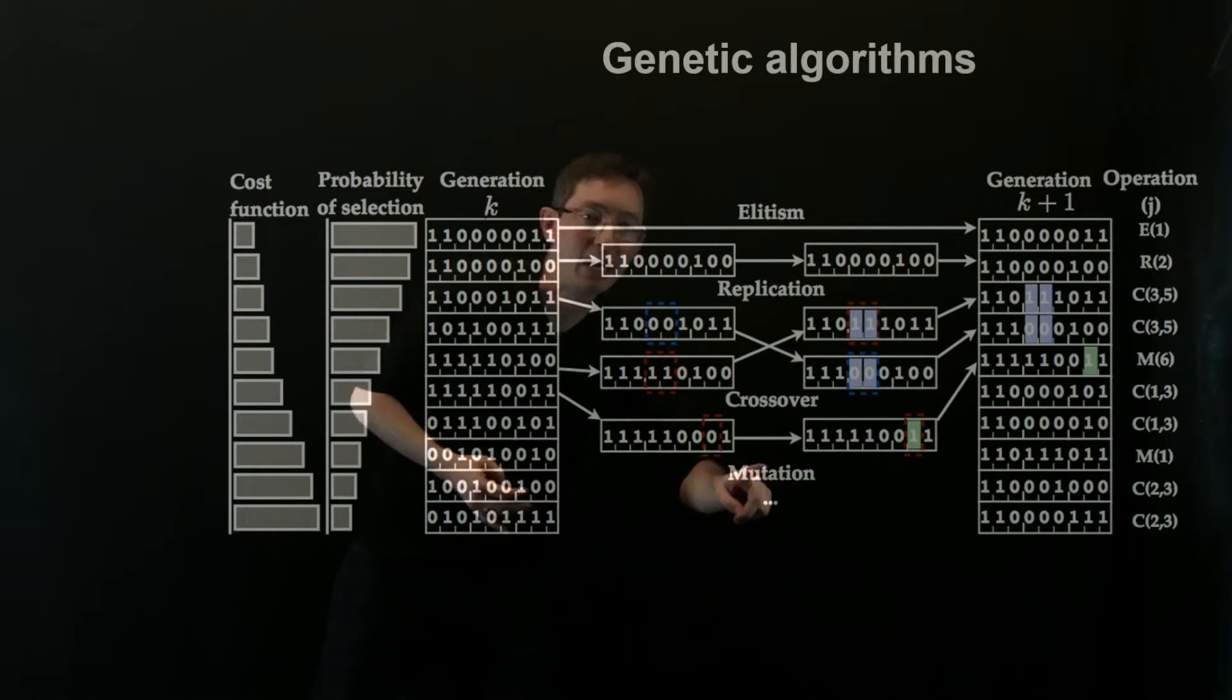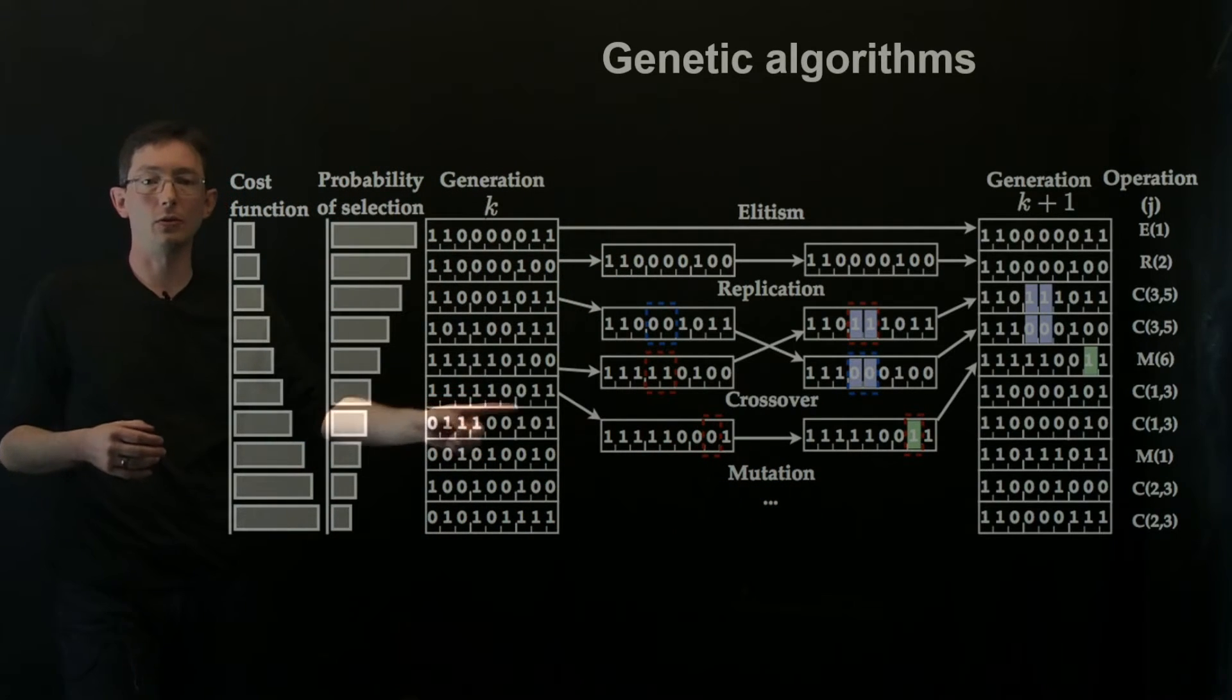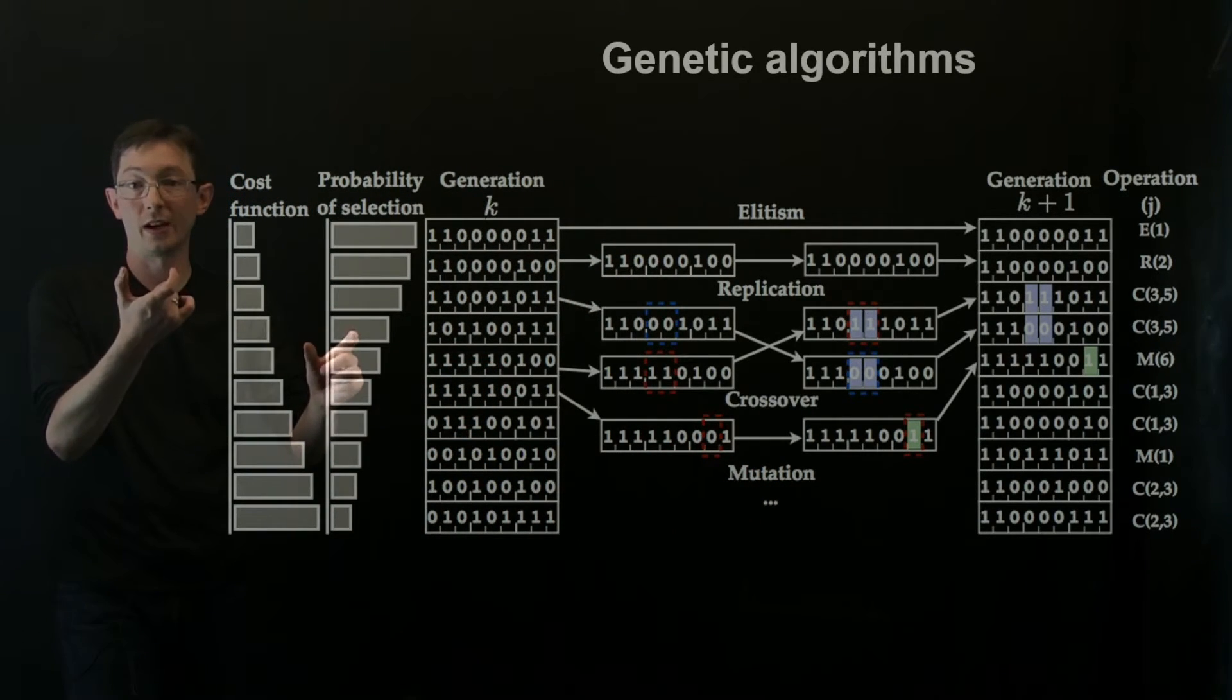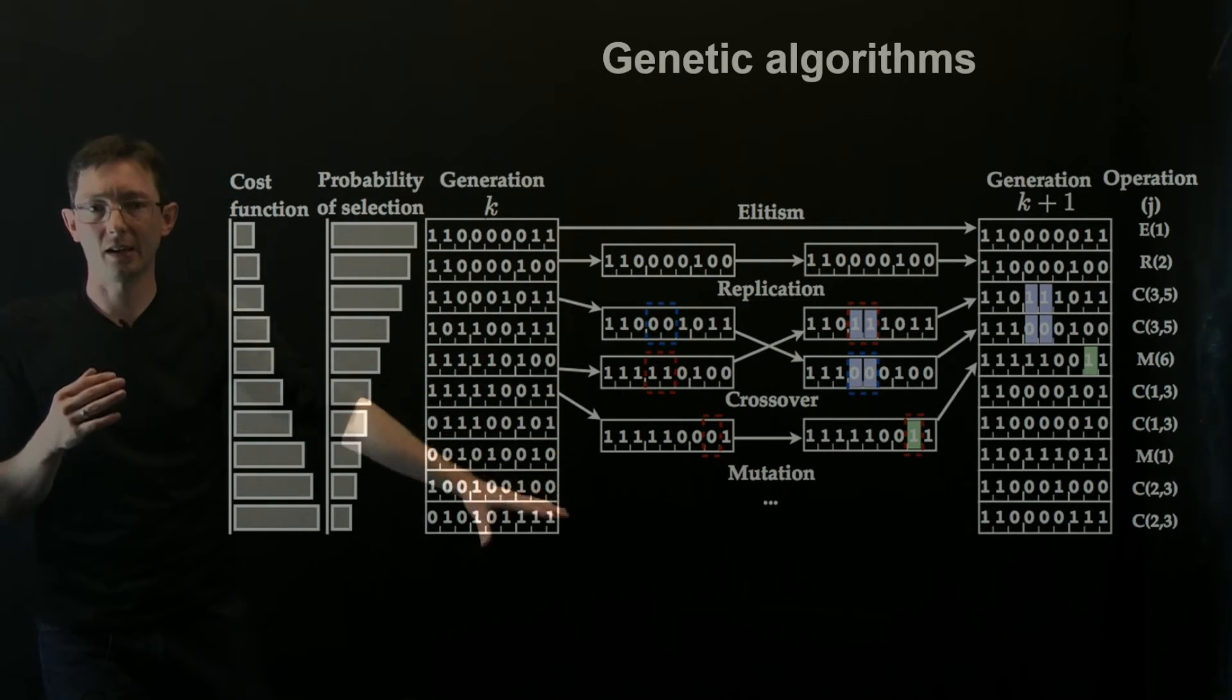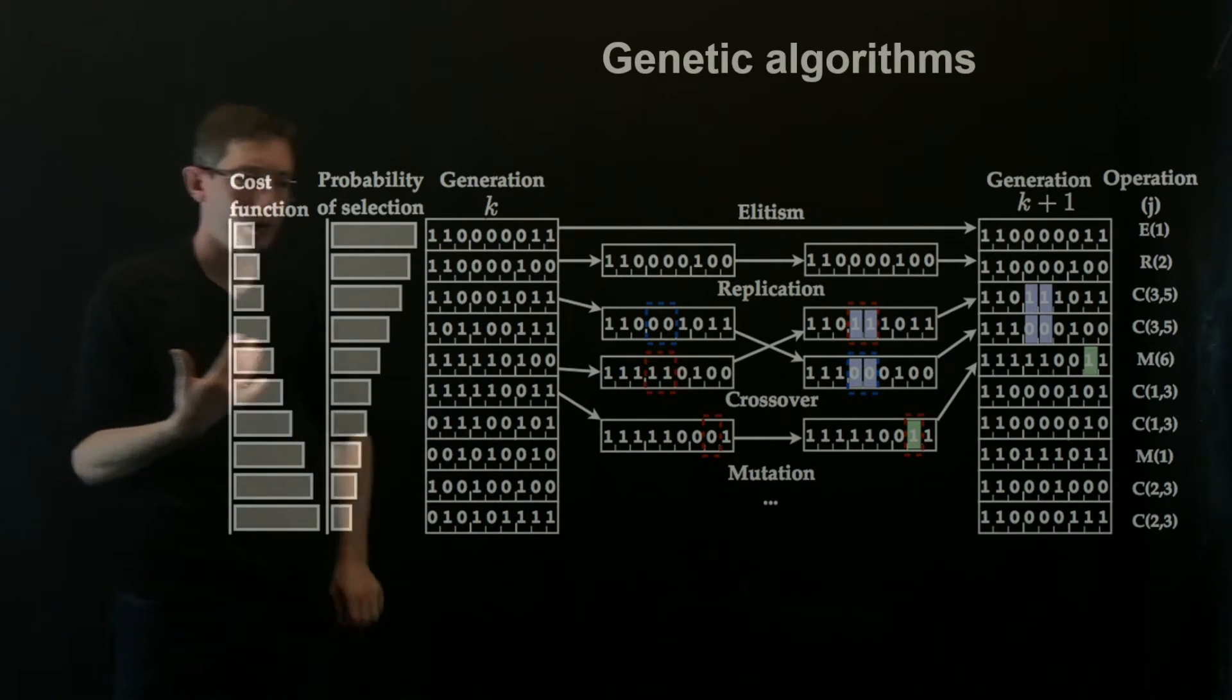And then finally, I have mutation, which is basically I take a control law and I pick some portion of this genetic sequence and I just randomly change those values. So those are the basic genetic operations we have to work with.